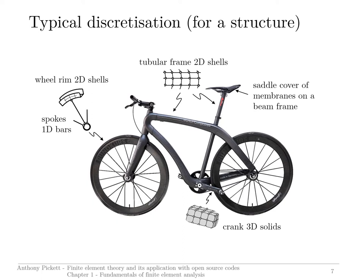The rims of the wheels could be modeled with 2D shells. The tires could be modeled with membrane elements — rather like shells but without any bending stiffness. You would have to have contact or common nodes to join the tires to the rim, and internal pressure would be necessary to inflate and keep the shape of the tires. The frame itself could be modeled with beam elements, giving each beam the correct moment of inertia and area.